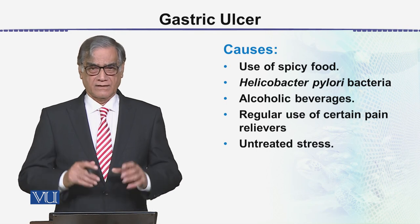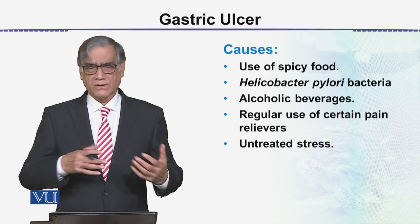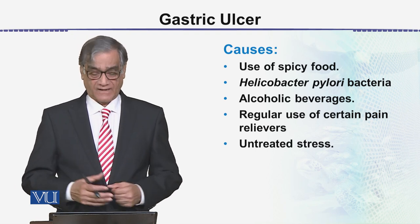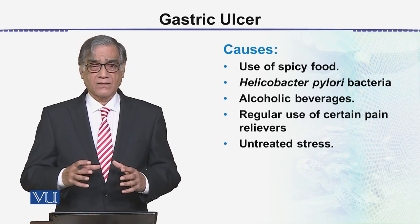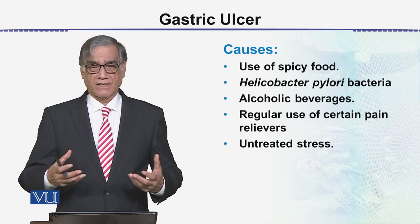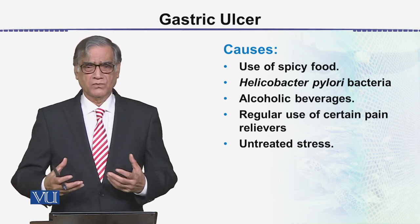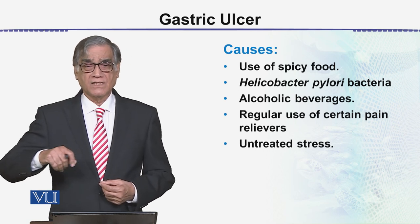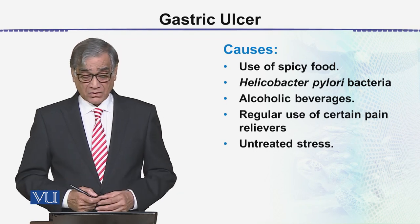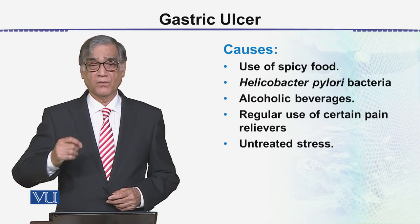Now we'll talk about the causes. Because we have two things — gastric ulcer and duodenal ulcer — what are the causes of this? The biggest cause is the excessive use of spicy food. There are a lot of people who use food high in chillies or chilli powder, and excessive use of chillies can break the mucus.